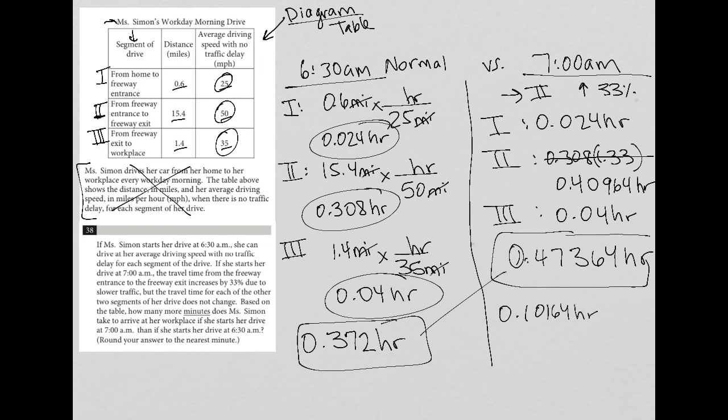We want it in minutes, rounded to the nearest minute. I multiply by 60 minutes per hour, so hours cross out. 0.10164 times 60.